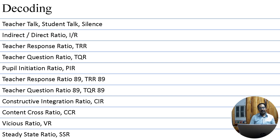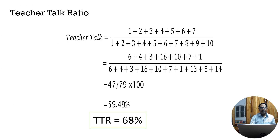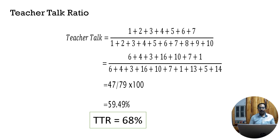Let us understand how these can be calculated. The first one is the teacher talk ratio. Teacher talk, student talk, and silence will each come in one category. Teacher talk is identified as categories 1 through 7 out of 10. The total tally in those 7 categories — whether from column or row — divided by the overall total (in our case 79), made into a percentage, gives 59.49%. This is our example value, based on normative data from thousands of real class observations.